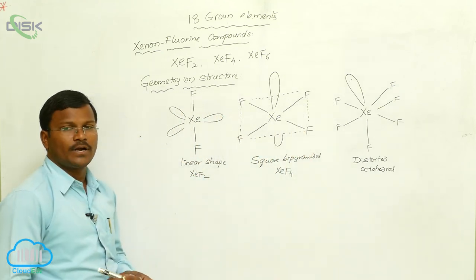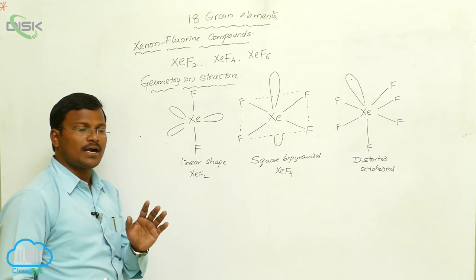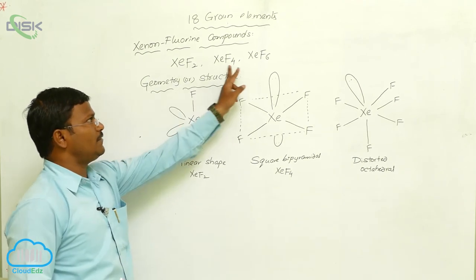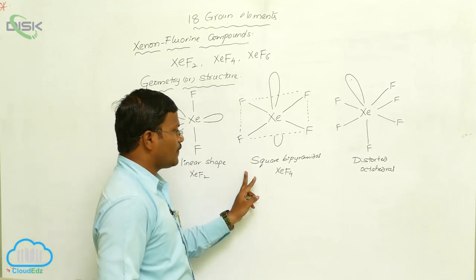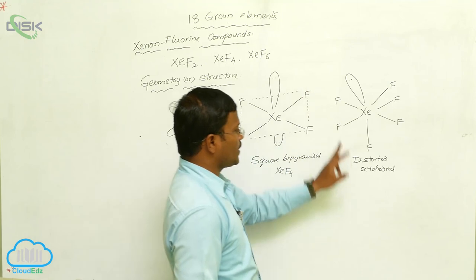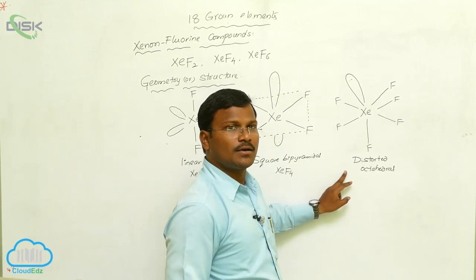Xenon reacting with fluorine produces three fluorides: xenon difluoride with linear shape, xenon tetrafluoride with square bipyramidal geometry, and xenon hexafluoride with distorted octahedral geometry.